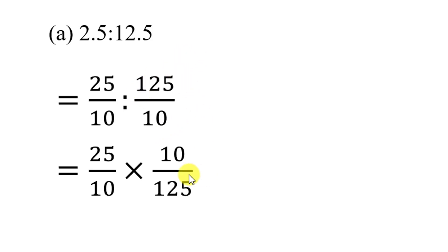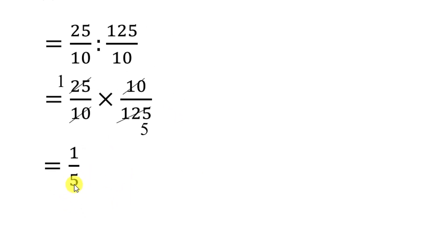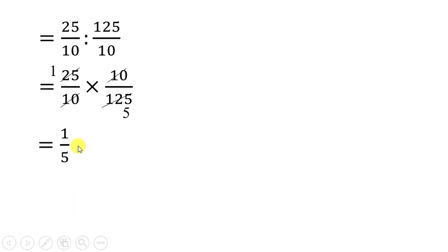Denominator numerator swap. We cut 25, 25 is 25, 25 to 125, 10, 10 cut. We cut 1 by 5, the ratio is 5.